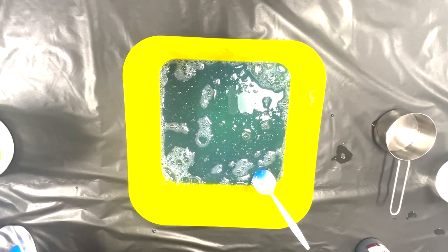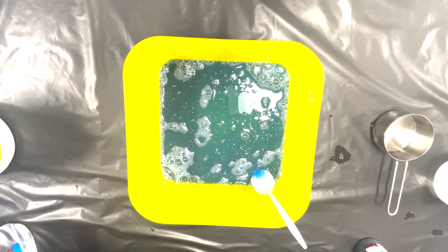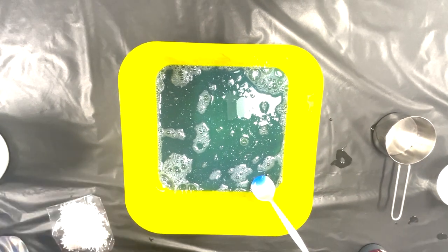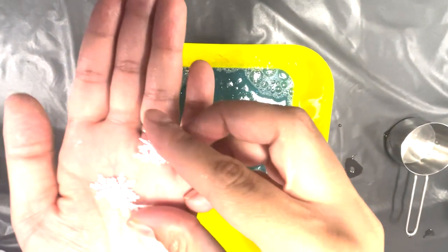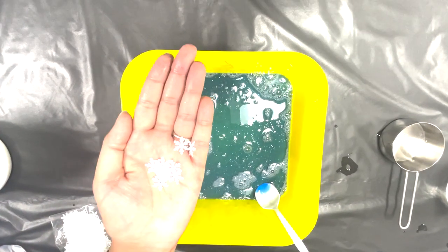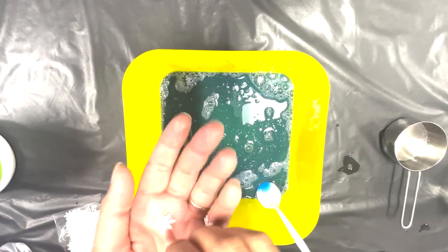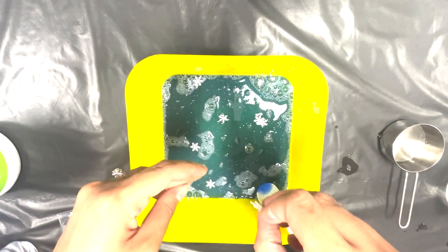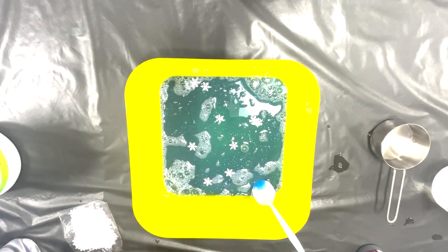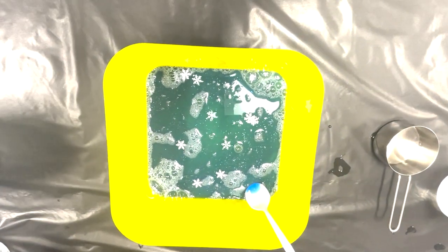So I sprinkle some snowflakes into our mixture and I'm going to mix it once again. Wow look at that blue and look I can see all the snowflakes with the silver glitter. I wonder how yours looks.